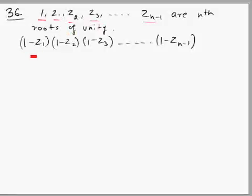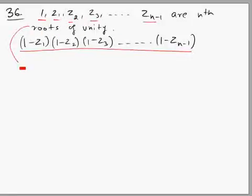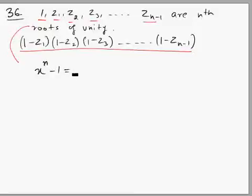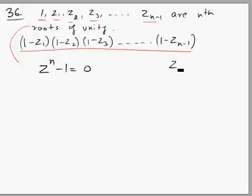We are supposed to find the value of a given expression. Now, these being nth roots of unity means all these n values are roots of the equation x^n − 1 = 0, or z^n − 1 = 0. This is how we find nth roots of unity — we form this equation. nth roots of unity means a value whose nth power is 1.